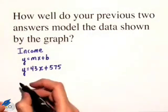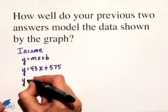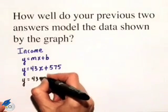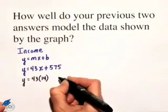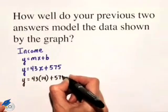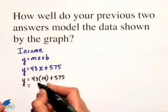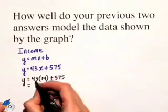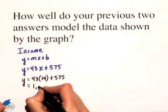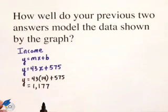So let's check that out right now. y equals 43 times, let's substitute 14 in for x, plus 575, and when we do the multiplication and then add 575, we do get 1,177.